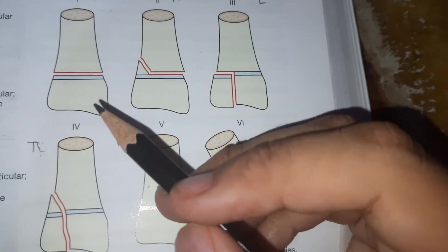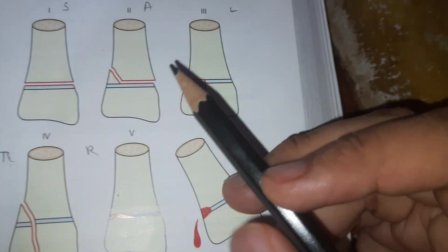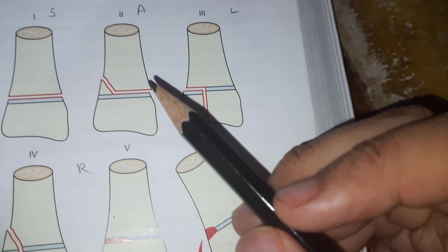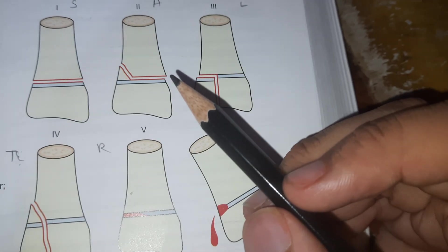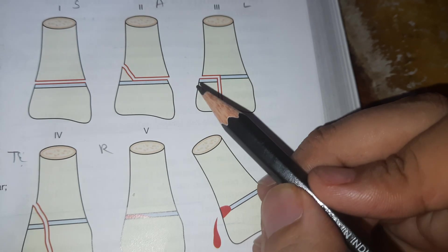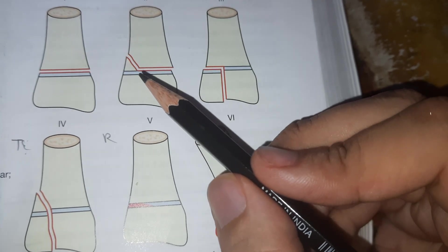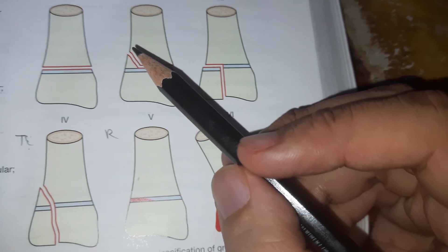Next type we have is Type 2 epiphyseal injury. Here the fracture line passes through the physis and exits through the metaphysis.